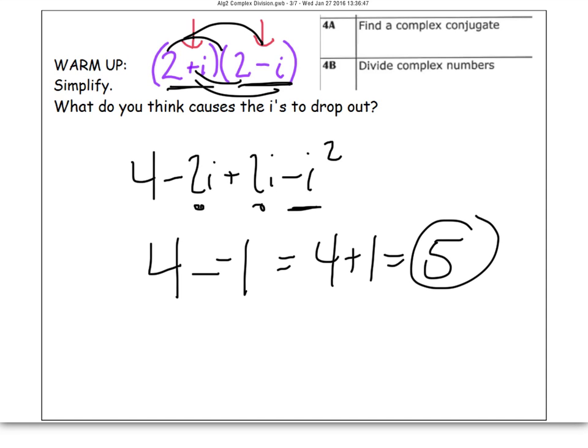So this is going to be a very important property for when we get into dividing complex numbers. When you take a complex number and its conjugate, when you multiply them together, the imaginaries fall out.